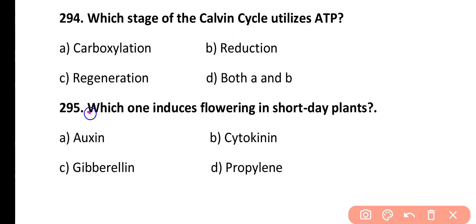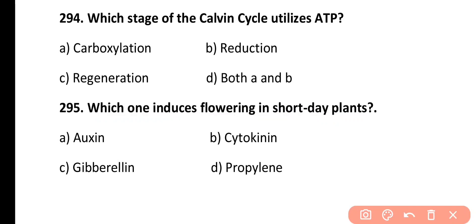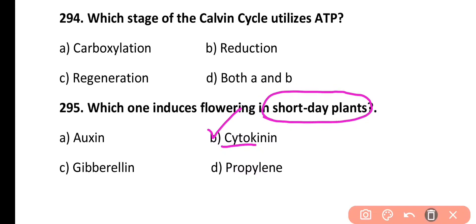Question 295. Which one induces flowering in short-day plants? Auxin, Cytokinin, Gibberellin, or Ethylene. Correct answer is Option B. Cytokinin is a plant growth stimulator and it induces flowering in short-day plants.